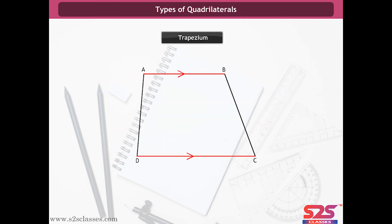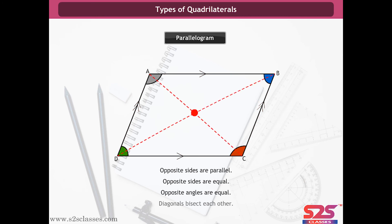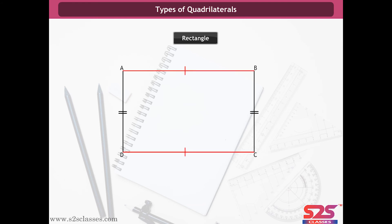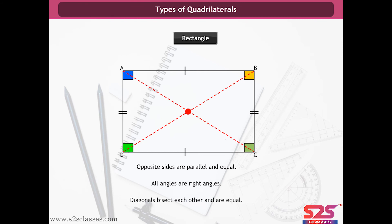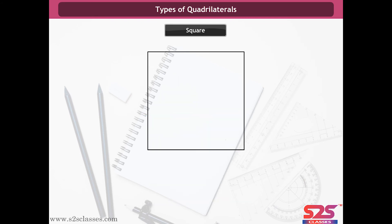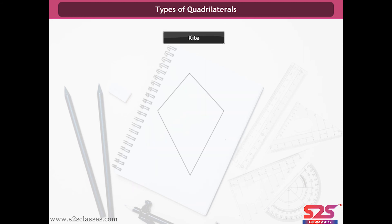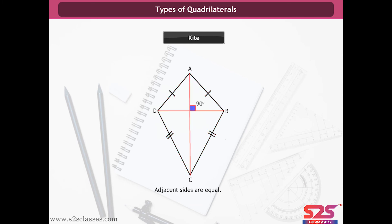A trapezium is a quadrilateral in which one pair of opposite sides is parallel. A parallelogram is a quadrilateral in which opposite sides are parallel, opposite sides are equal, opposite angles are equal, and its diagonals bisect each other. A rectangle is a parallelogram whose opposite sides are parallel and equal, all angles are right angles, and diagonals bisect each other and are equal. A rhombus is a parallelogram whose adjacent sides are equal, and its diagonals bisect each other at right angles. A square is a parallelogram whose all sides are equal, one angle is a right angle, and diagonals bisect each other at right angles and are equal. A kite is a quadrilateral whose adjacent sides are equal and diagonals intersect at right angles.